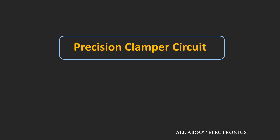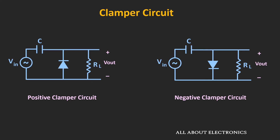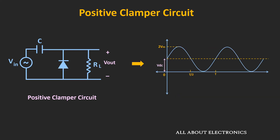Hey friends, welcome to the YouTube channel All About Electronics. In the earlier video of the clamper circuit, we have already seen what a clamper circuit is, and we discussed in detail about the positive and negative clamper circuit. In the case of the positive clamper circuit, if we apply a sine wave with the peak value of Vm, then this circuit shifts the entire waveform upwards by Vm volts.